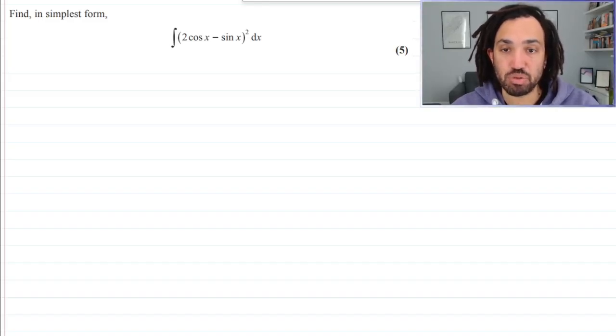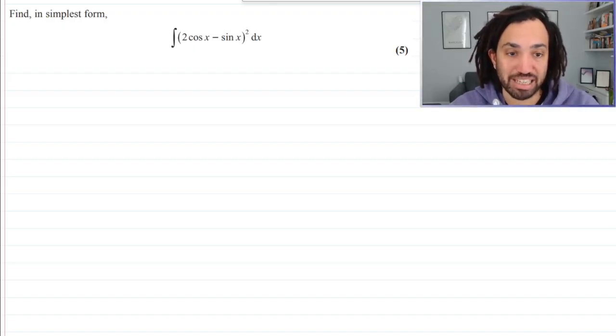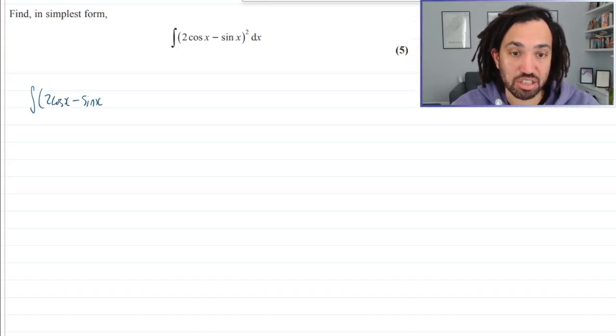We've got an integral, 2 cos x minus sin x all squared. So my first thought is we need to multiply these brackets out. So this is the integral of 2 cos x minus sin x multiplied by 2 cos x minus sin x.